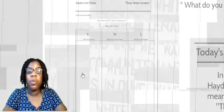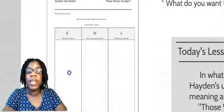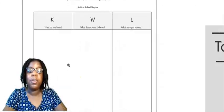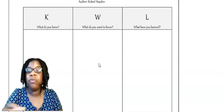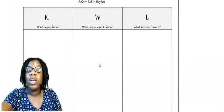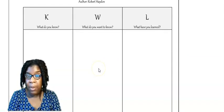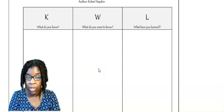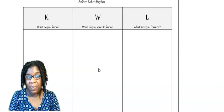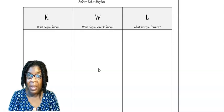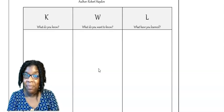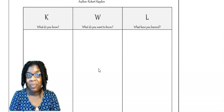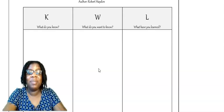Before we read our poem, we're going to go back to the KWL chart. This is a good time to write some things that you have learned. What have you learned about African American life in 1920s Detroit? Write one thing. Now, what have you learned about the author, Robert Hayden? Write one thing.